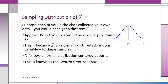This is because the x-bar random variable is normally distributed, as long as the sample size is relatively large. It follows a normal distribution centered about mu, the same mean of the underlying x population. This reasoning is called the central limit theorem, and everything we do in statistical inference relies on this theorem.